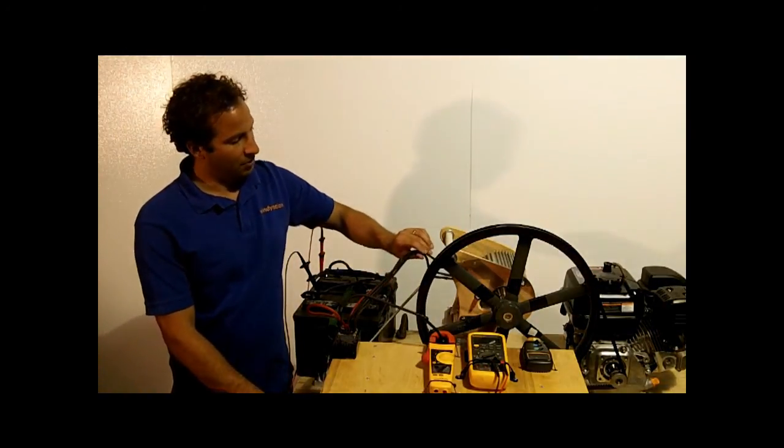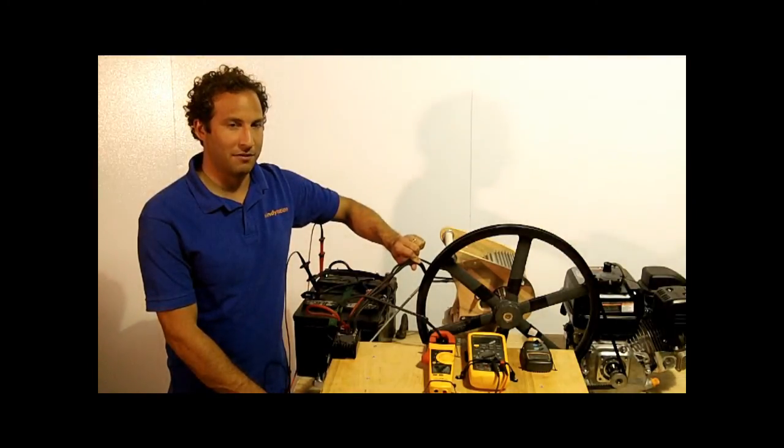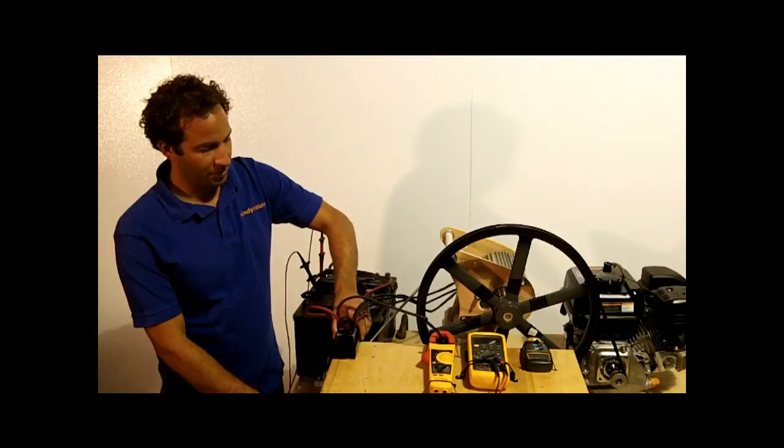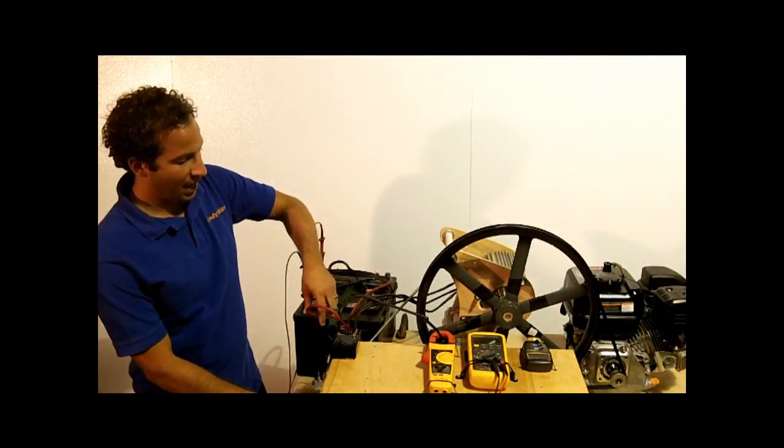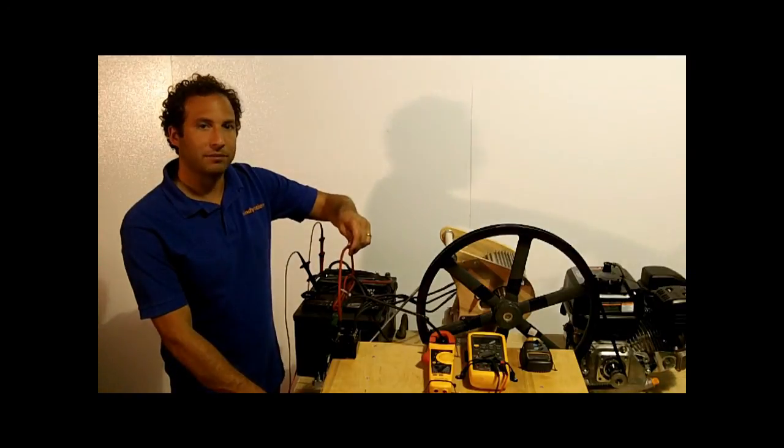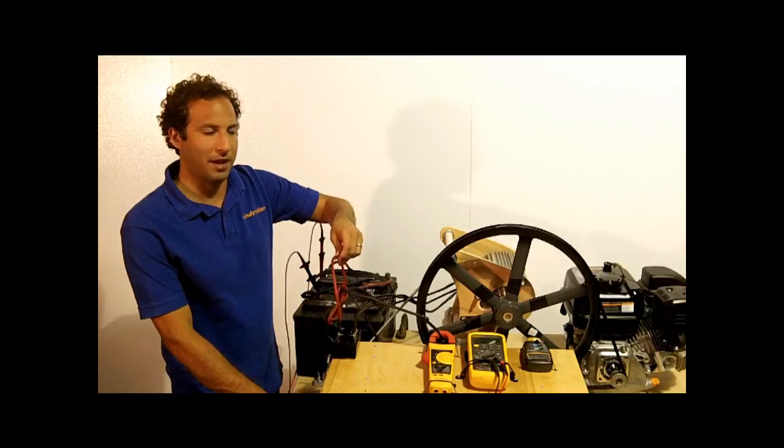If you remember from the previous video, these three wires here are the three-phase AC output of the Wintura 750. They're hooked up to a three-phase bridge rectifier, which converts it to DC electricity, and the positive DC output from the rectifier is hooked up directly to the positive terminal of the 12 volt battery bank.